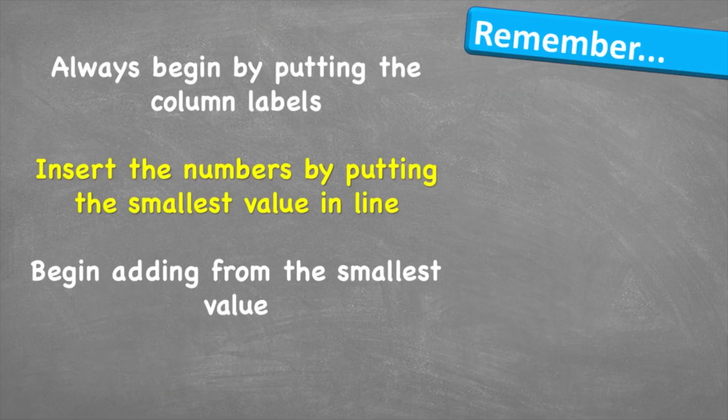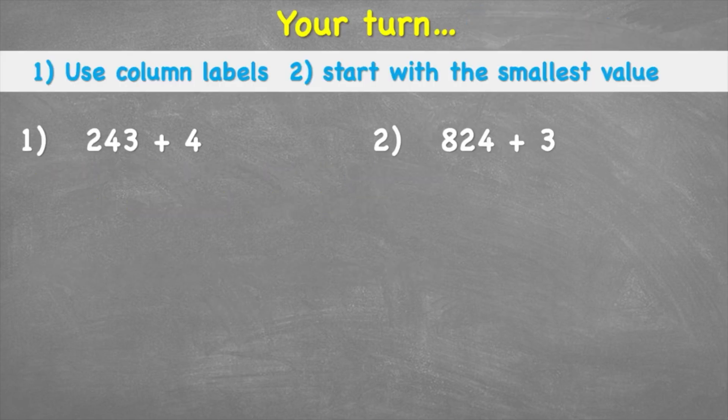Let's look at what to remember: always begin by putting the column labels — this helps you place numbers correctly and avoid small mistakes. Then insert the numbers by putting the smallest value in line first, and begin adding from the smallest value. Now your turn — have a go at these two questions. Find a piece of paper, take your time, and put your answers in the comment section. Press pause on the video now — good luck!